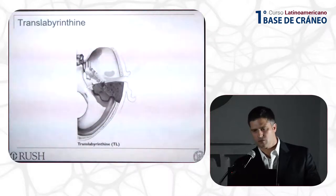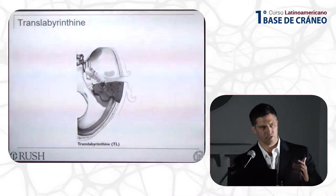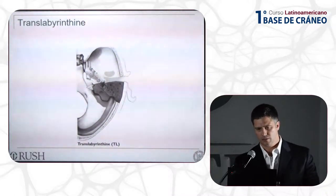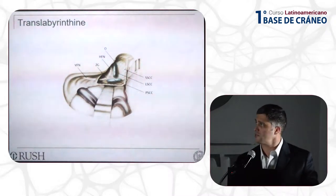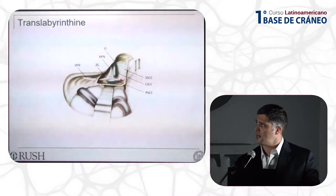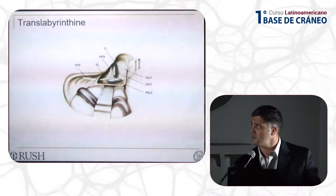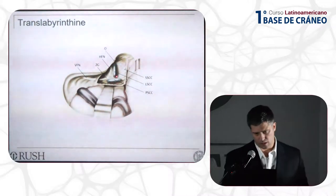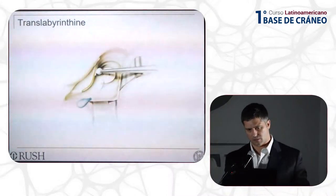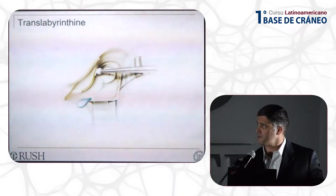The trans-lab approach offers excellent access for patients with poor or absent hearing, or patients in whom preservation of hearing is not a high priority. It begins with mastoidectomy, exposure of the semicircular canals, and skeletonization of the vertical segment of the facial nerve, then we begin the labyrinthectomy. I'll start by identifying the lateral semicircular canal by bivalving it, then proceed to the posterior semicircular canal, follow that into the common crus, and open the bone overlying the superior canal, where you'll find the subarcuate artery, which is a good landmark for the internal auditory canal.